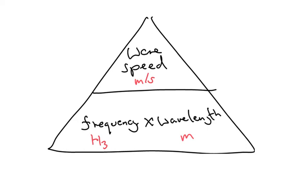So this is the velocity-frequency-wavelength triangle. If you want to find out what the wave speed is, you do frequency times by wavelength. If a question is asking, well, what's the frequency, you do the wave speed divided by the wavelength. And maybe a question is asking for the wavelength—well, wave speed divided by the frequency.